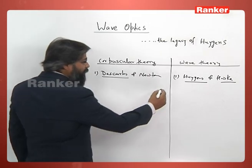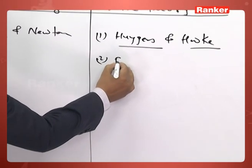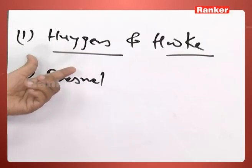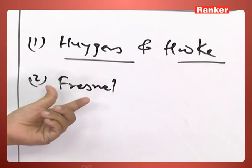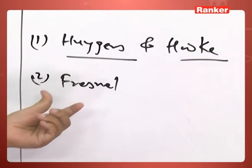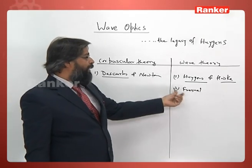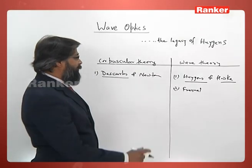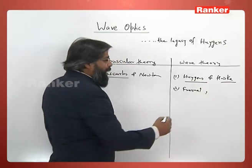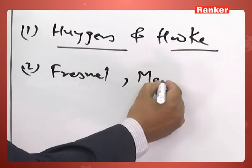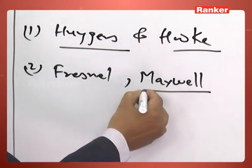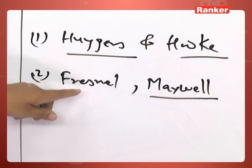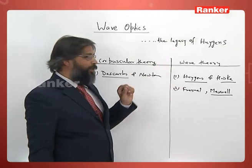Later on, workers like Fresnel advanced the field, and the Fresnel-Huygens wave theory became very popular. It could explain the new phenomena of interference and diffraction, and wave theory became more popular. Maxwell was then able to prove that light is an electromagnetic wave, and so wave theory was fully developed into an electromagnetic wave theory.